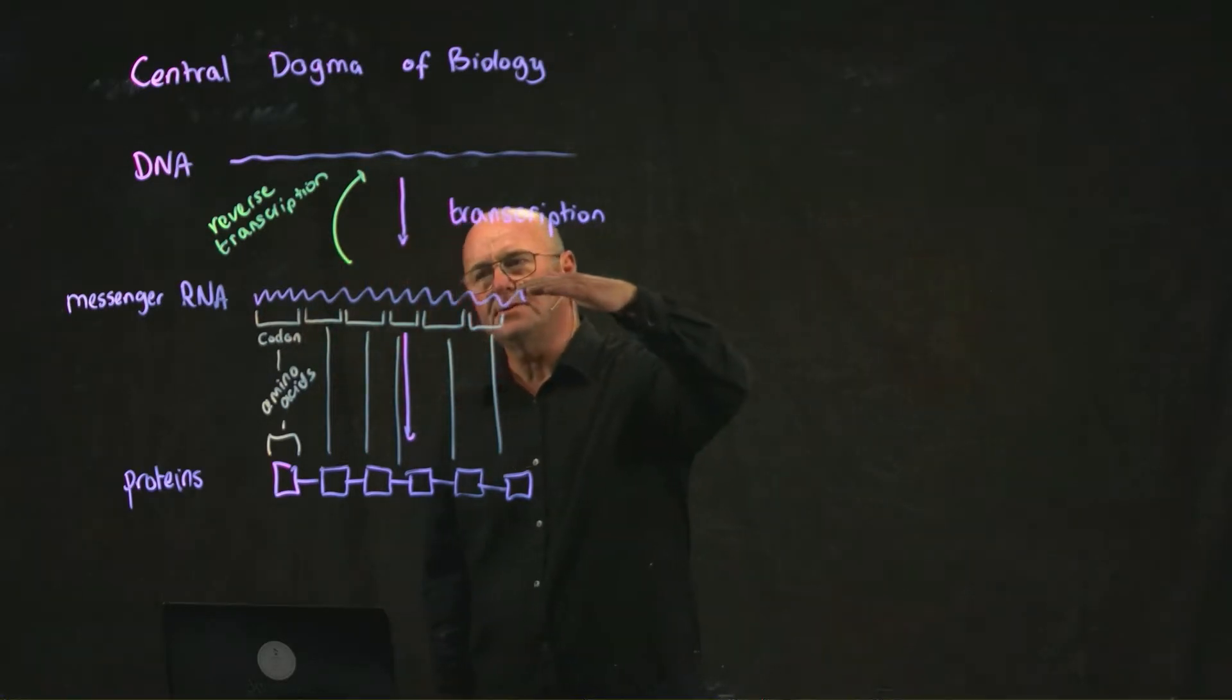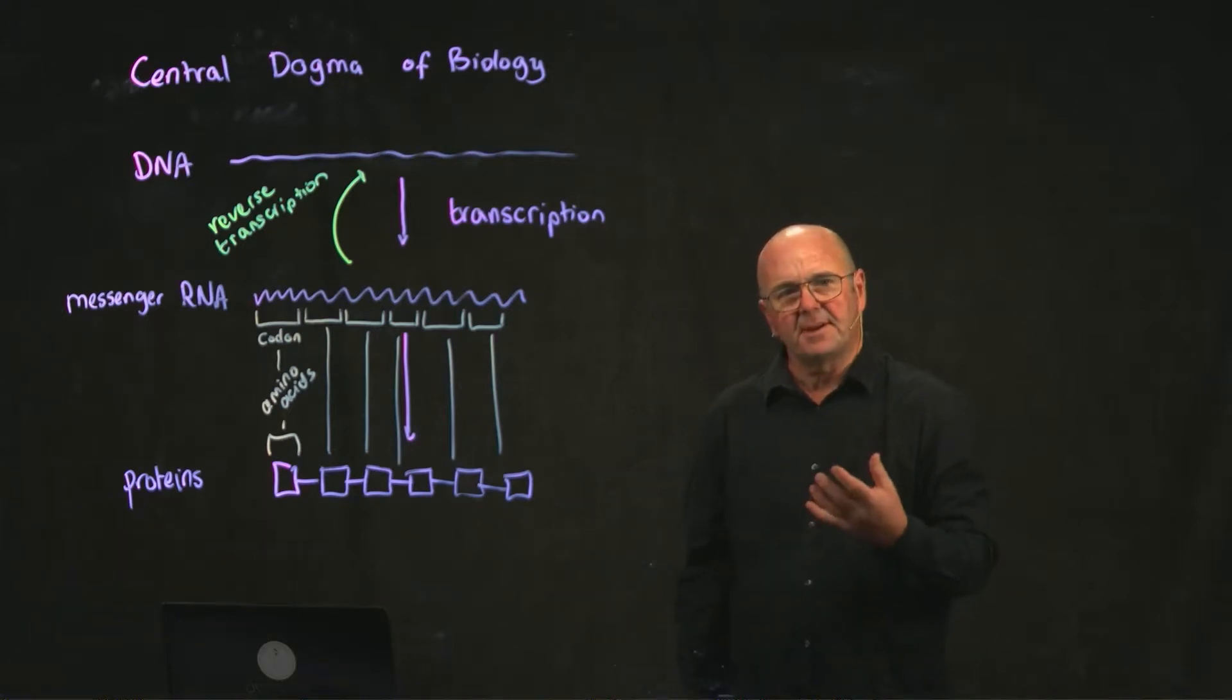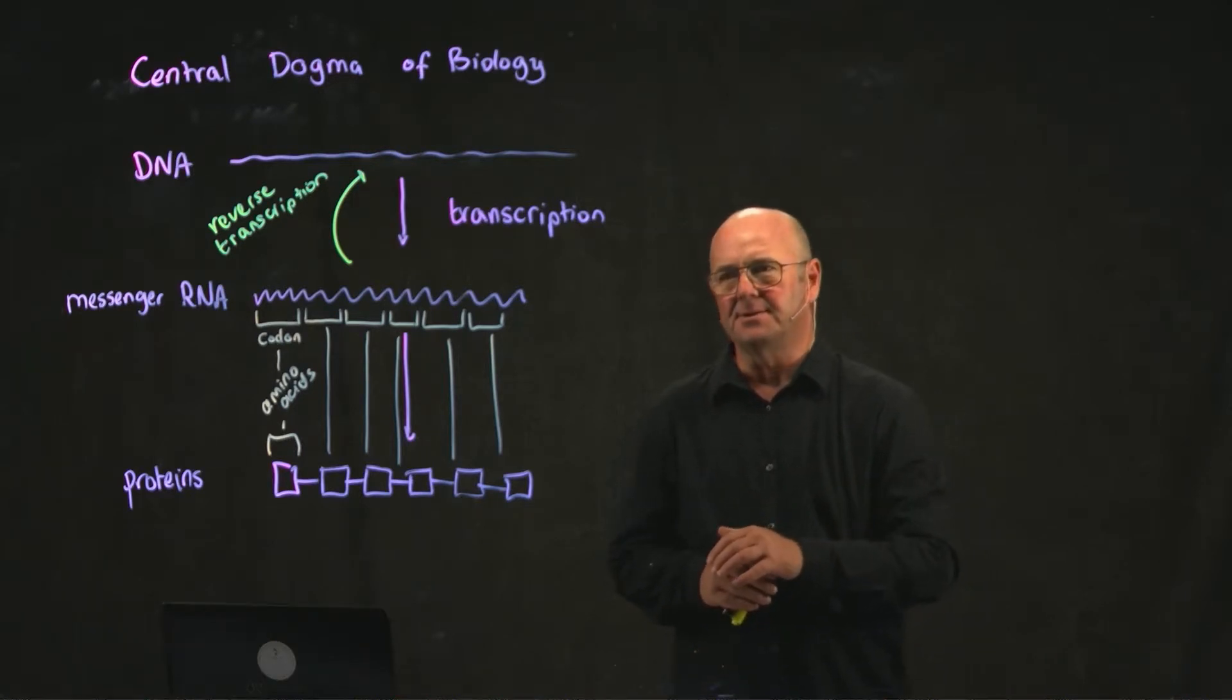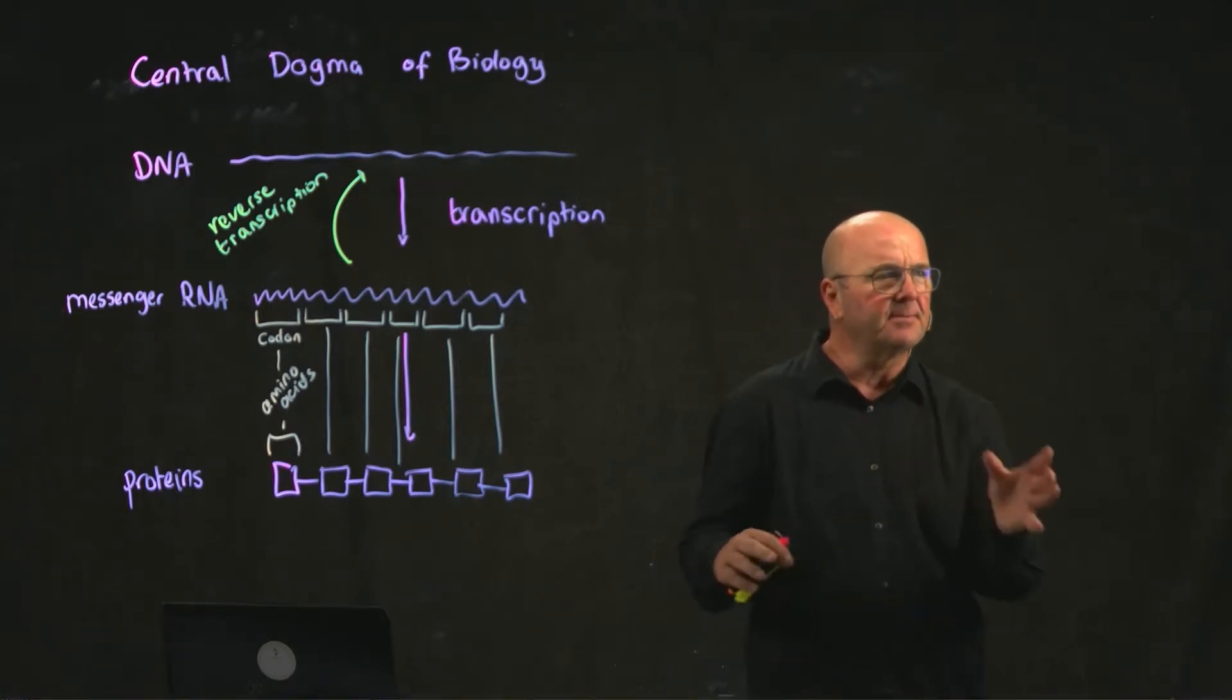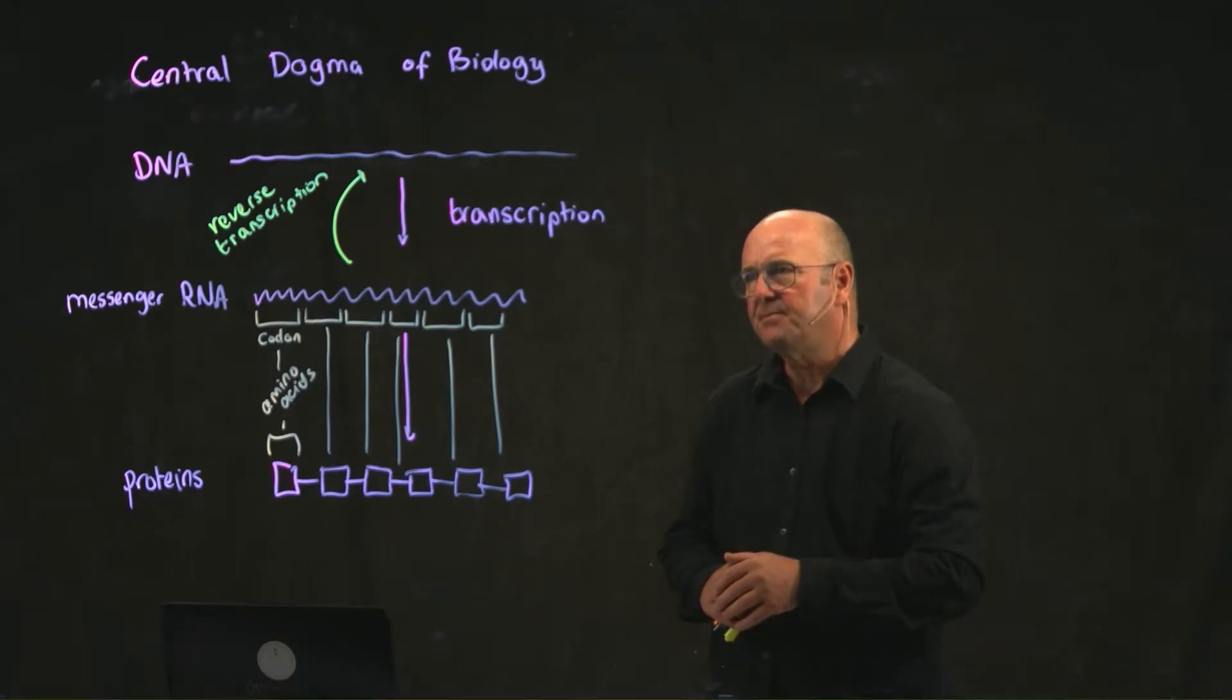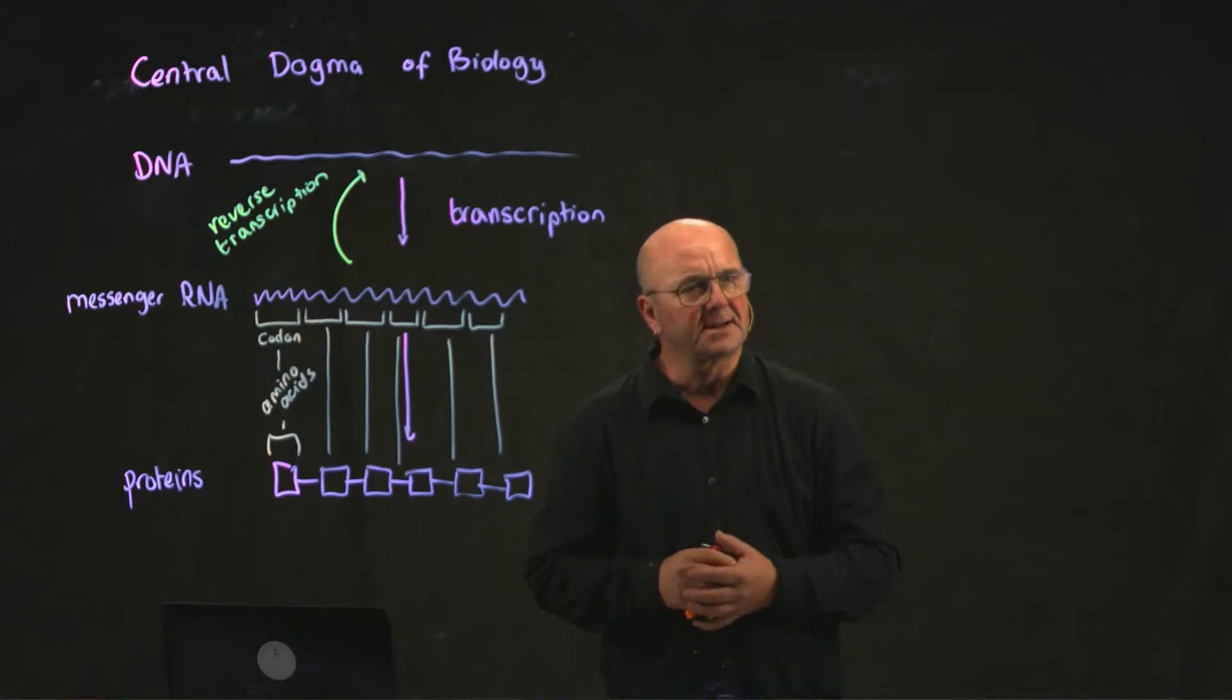The code to go from mRNA to amino acids, proteins, is standard. Basically everything, every life form we know, uses essentially the same code. That's not true. There are about a dozen or so codes that different organisms use, but it's essentially the standard code.